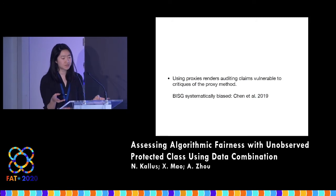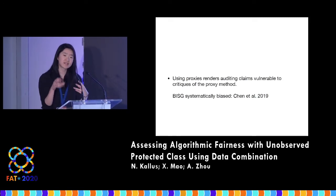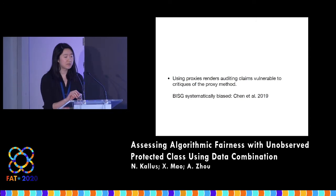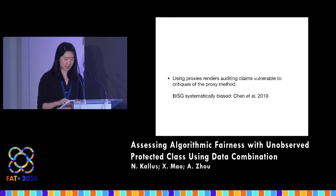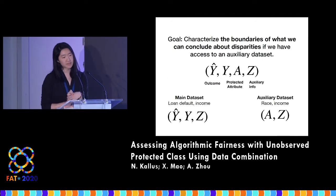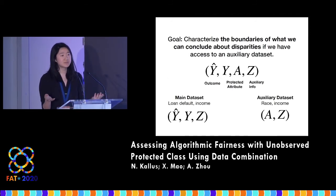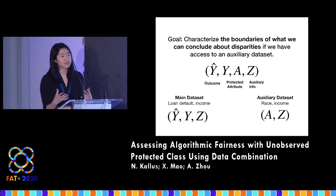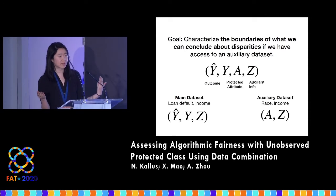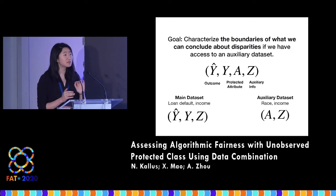BISG is controversial. In previous work that appeared last year at this conference, its systematic bias was studied, and there's a lot of gray literature and academic literature studying exactly when BISG fails. The goal of our work is to really try to characterize the boundaries of what can be concluded about disparities in this very common setting where we have access to an auxiliary data set. We're not going to focus on any particular estimation method, and we're not going to make any assumptions.